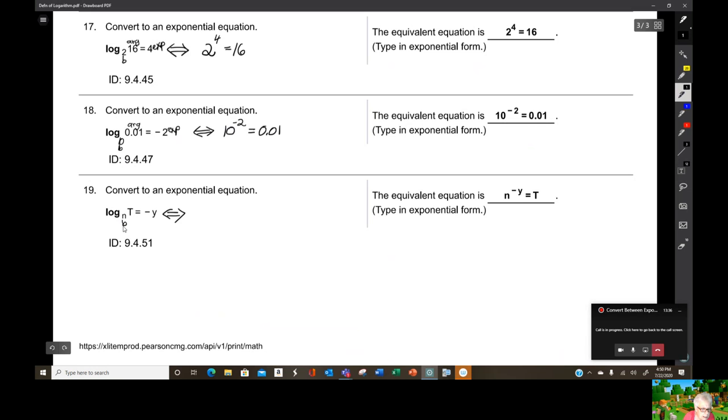But it's good to analyze them. This is the base, this is the argument, this is the exponent. So, the base n raised to the exponent, negative y equals t, the argument. Practice this. You are going to need it. I promise. Bye for now. Oh, I'm back in play land.